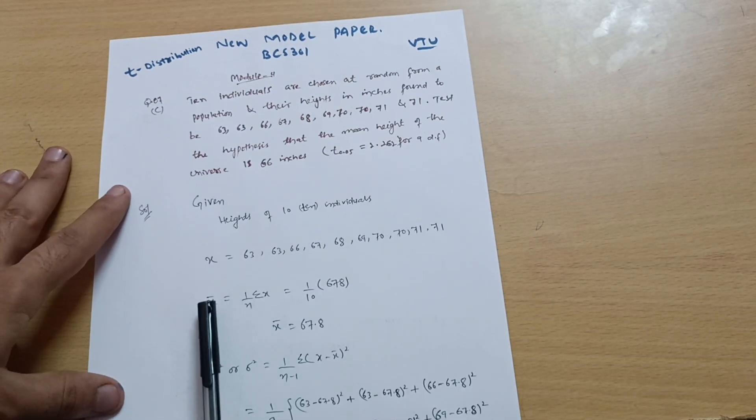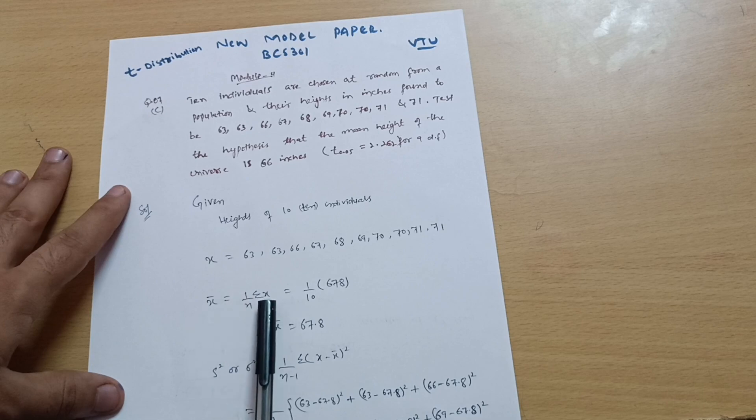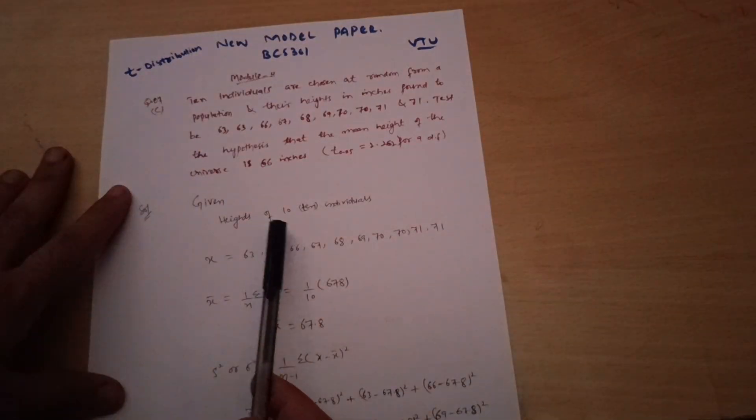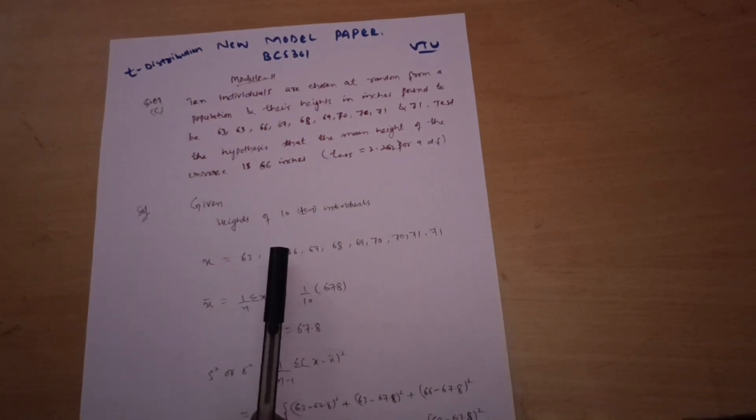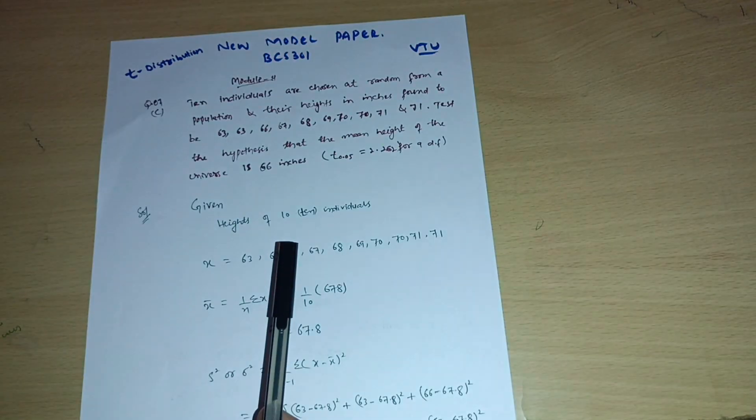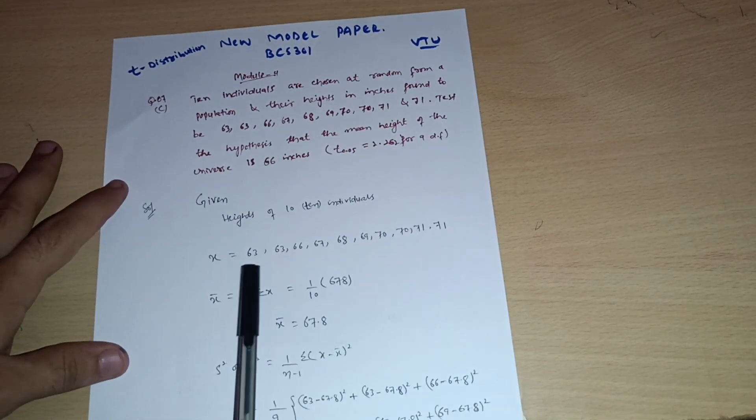So we can calculate x bar from this x. It is given by 1 divided by n summation of x. So 1 divided by n, n means 10 number of individuals are here. I hope it is clear now. x bar is equal to, yes, x bar...